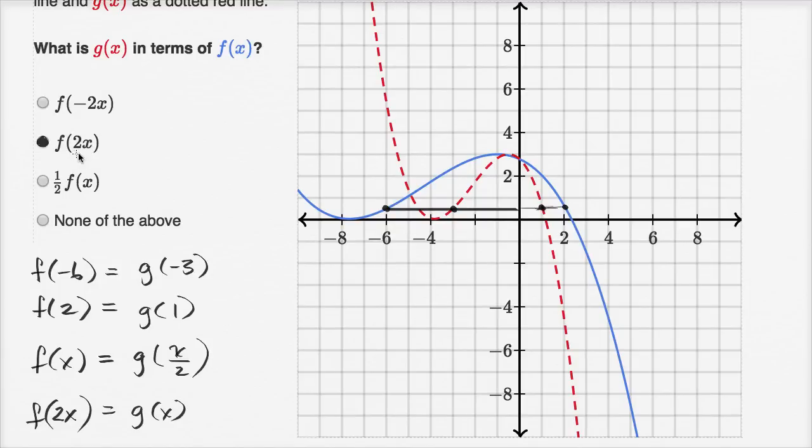When you multiply the input into a function by a number larger than one, it's going to compress and make things happen faster. The input increases or becomes negative faster, so it thins it up. You can try some of these values yourself. Find the corresponding points where f and g match up, and you'll see that to get the same value, you have to put twice as much into f as you have to put into g.